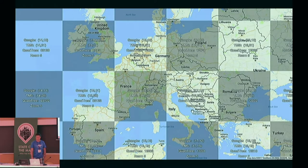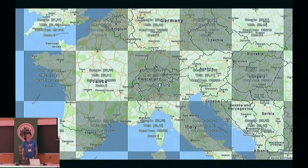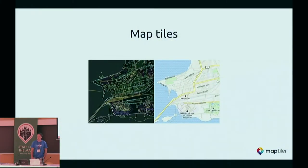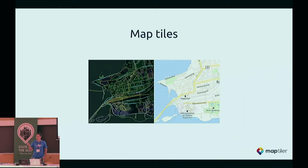I believe a lot of you know how map tiles work. Whenever you look at a map, you're interacting with a set of individual images or tiles, which are pre-generated or generated on demand. In recent years, these tiles turned from raster tiles into vector, so the vector data are now transferred to the client and rendered on demand.